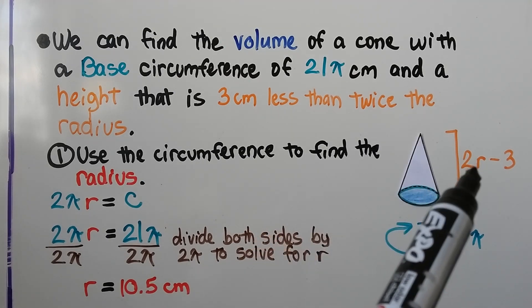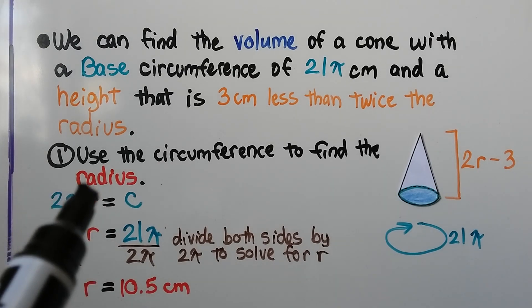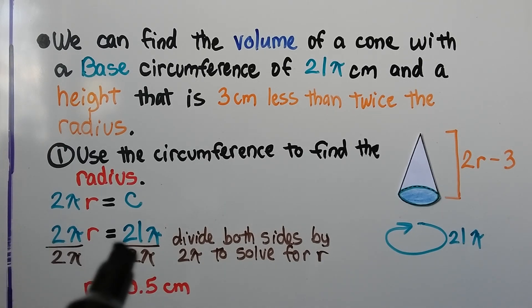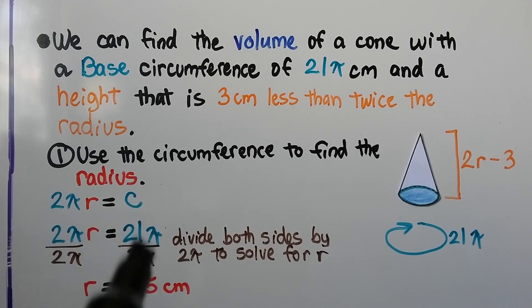So it would be 2 times the radius minus 3. We use the circumference to find the radius. Circumference is equal to 2πr, 2 times pi times the radius. That means we can divide both sides by 2π. When we substitute in 21π for the circumference, this cancels out, and we get the radius. The radius is equal to 10.5 centimeters.